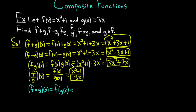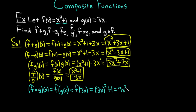You replace the inside piece first. G of x is 3x, so you replace that piece: it's f of 3x. Then your f of x is x squared plus 1, so your x becomes 3x. Instead of x squared, it's (3x) squared plus 1. When you square the 3x, you square the 3 to get 9 and square the x to get x squared. So you get 9x² + 1. That would be (f∘g)(x).